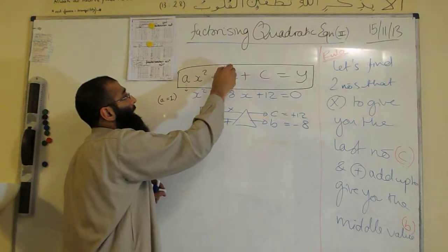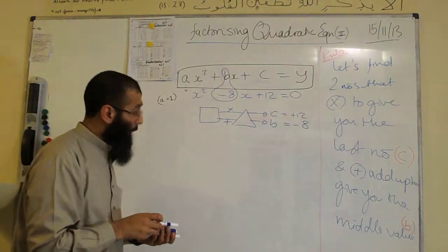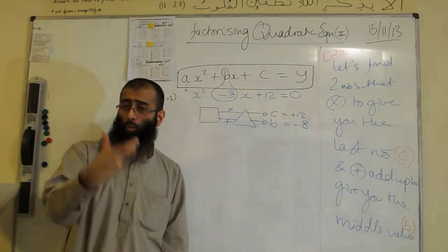How do we know it's minus 8? Because we look over here, the b is minus 8. Okay, are we happy with that? We're looking for numbers that multiply to give us plus 12 and add to minus 8.